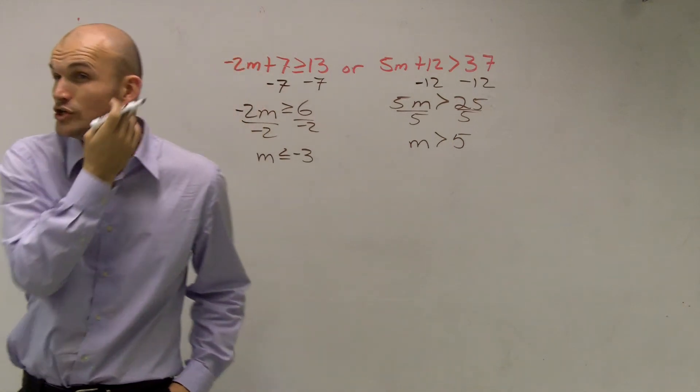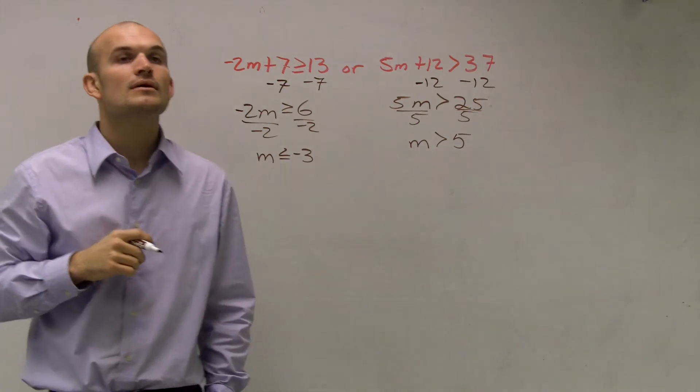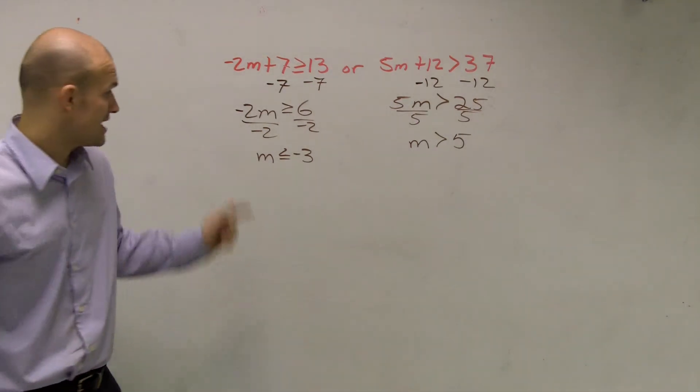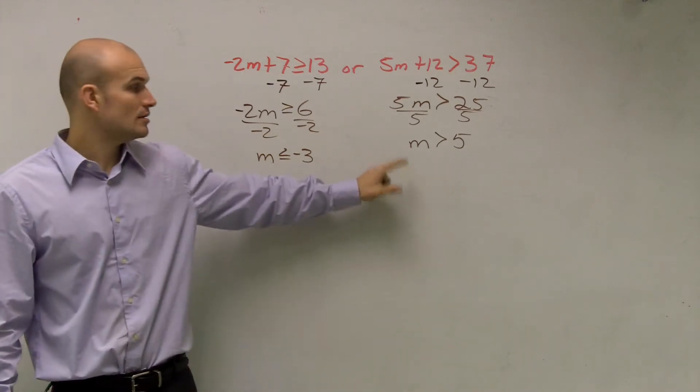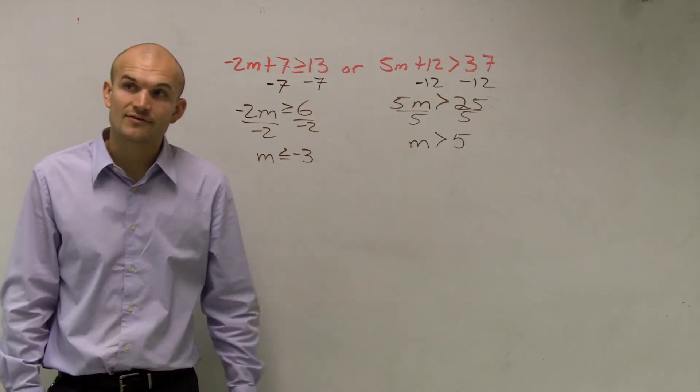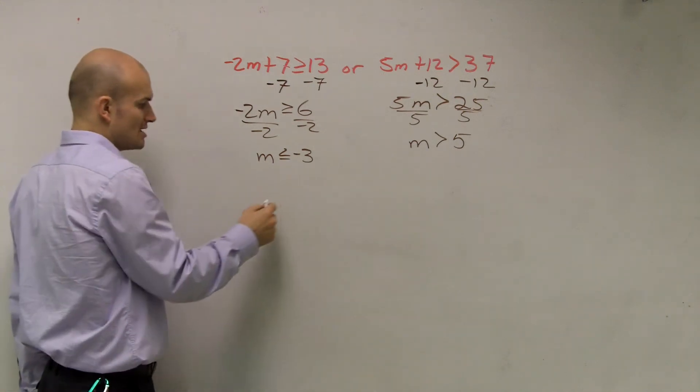So now what I have is two inequality statements that I need to represent on the same graph. The first inequality statement is all numbers that are less than negative 3 or all numbers that are greater than 5. So what I'm going to do is create a number line that's going to have both these numbers on there.